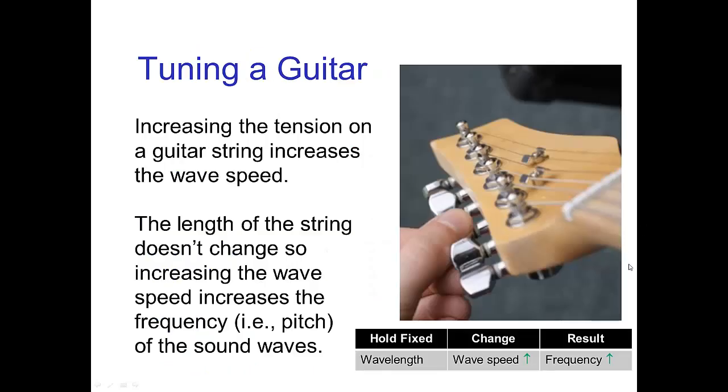Now another example of the relationship among wavelength, wave speed, and frequency is if we are tuning a guitar and we adjust the tension on the guitar string, increasing the tension increases the wave speed. Now the length of the guitar string basically stays the same. In that case, the wavelength or the length of the string stays fixed. We increase the tension, which increases the speed of waves on the string, and that increases the frequency of the note.